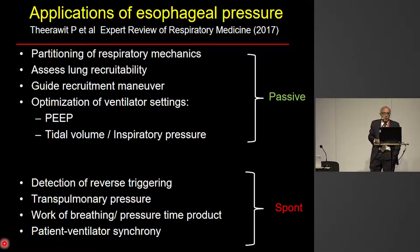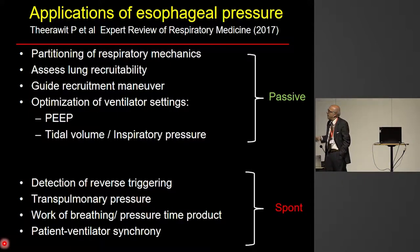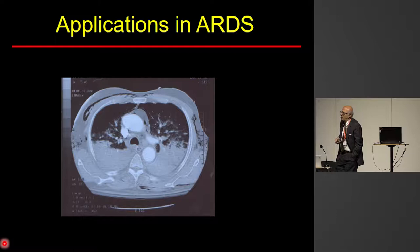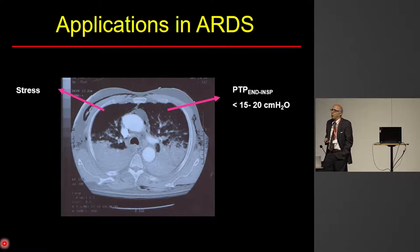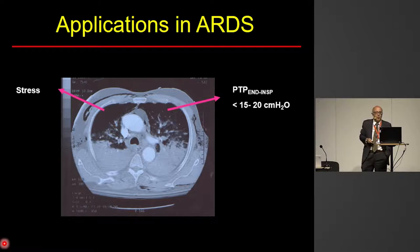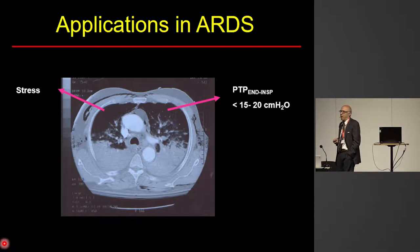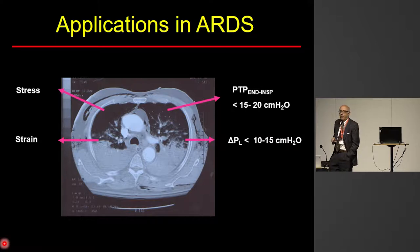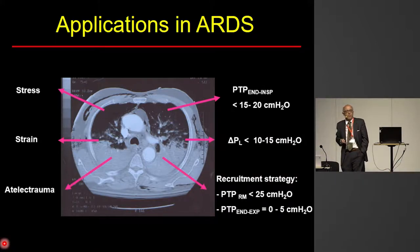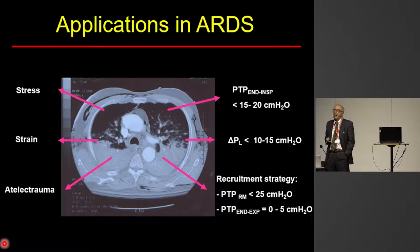The application of esophageal pressure measurements and transpulmonary pressure measurements is different from passive to spontaneous mechanical ventilation. One of the most important applications in ARDS is that it can give us more information on how to optimize protective mechanical ventilation, reaching an inspiratory transpulmonary pressure not higher than 15 to 20 cm of water, which is equivalent to around 25 to 27 cm of water in the airways. We also have to limit the driving transpulmonary pressure below 10 to 15 cm of water maximum.